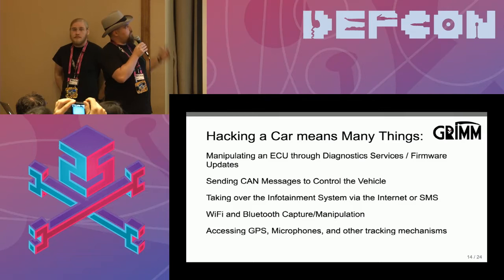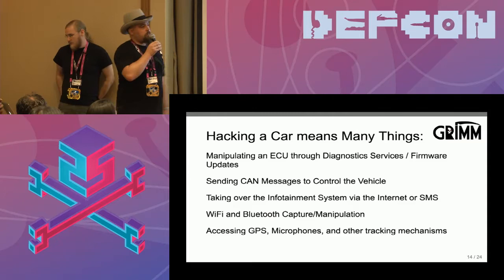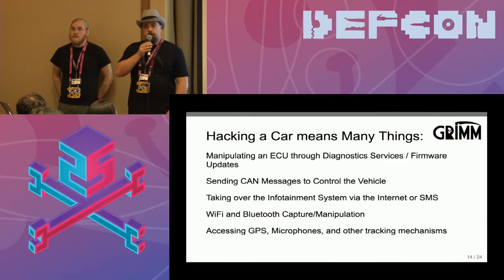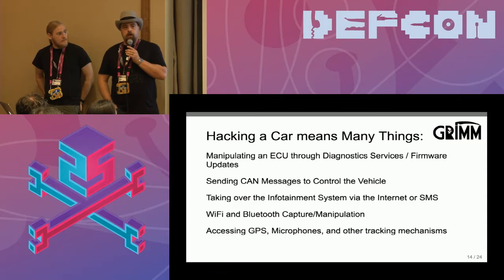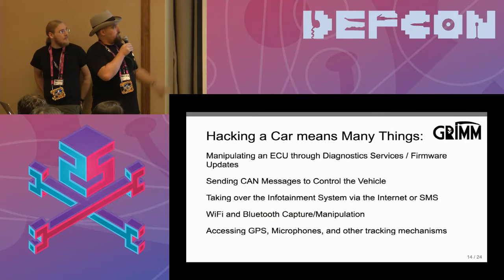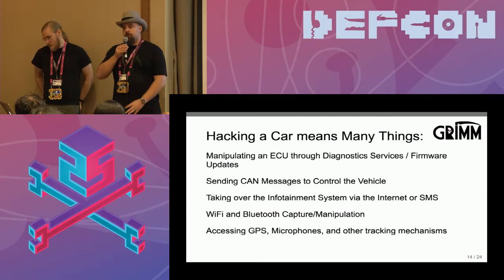Hacking a car can mean a lot of different things. A lot of what we've found is diagnostics that are left enabled on ECUs that can be triggered at times that would be inconvenient for the driver — like brake bleeding at 70 miles an hour. There's also sending CAN messages to control the vehicle, doing enough reverse engineering to figure out what different messages do, and taking over the infotainment system via the internet or SMS. The infotainment system is a full-fledged operating system — Windows CE, QNX, Android — running Wi-Fi, running Bluetooth. This is a lot of attack surface, and very quickly becoming very well-known attack surface.